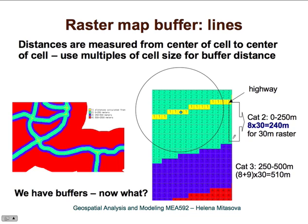This illustrates the issue of the relationship between raster resolution and buffer width. For example, if we want a 250-meter buffer on a 30-meter raster, the closest multiple is 240 meters, so our buffer will actually be only 240 meters wide. If we want exactly 250 meters we need to resample to 10-meter resolution. Similarly for 500 meters — it is not a multiple of 30, so either we resample or we accept that buffer width accuracy is within 30 meters, making it 510 meters.